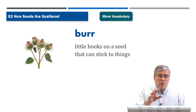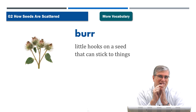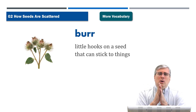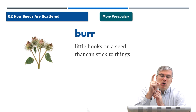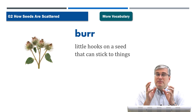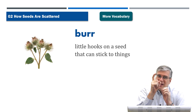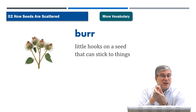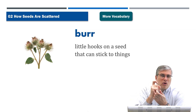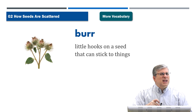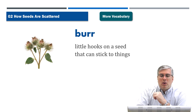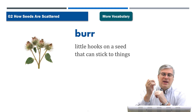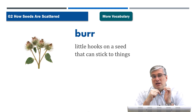Next word is burr. We talked about stick — those little pieces of plant that stick to your socks that are really hard to get out. What part of the plant is that? We call that a burr. Burrs are little hooks on a seed that can stick to things. Many plants have tiny hooks, and if you look at them carefully with a magnifying glass you can see they're like little hooks that grab on to your clothing — especially socks, but also pants. They grab on and stick with you as you move.